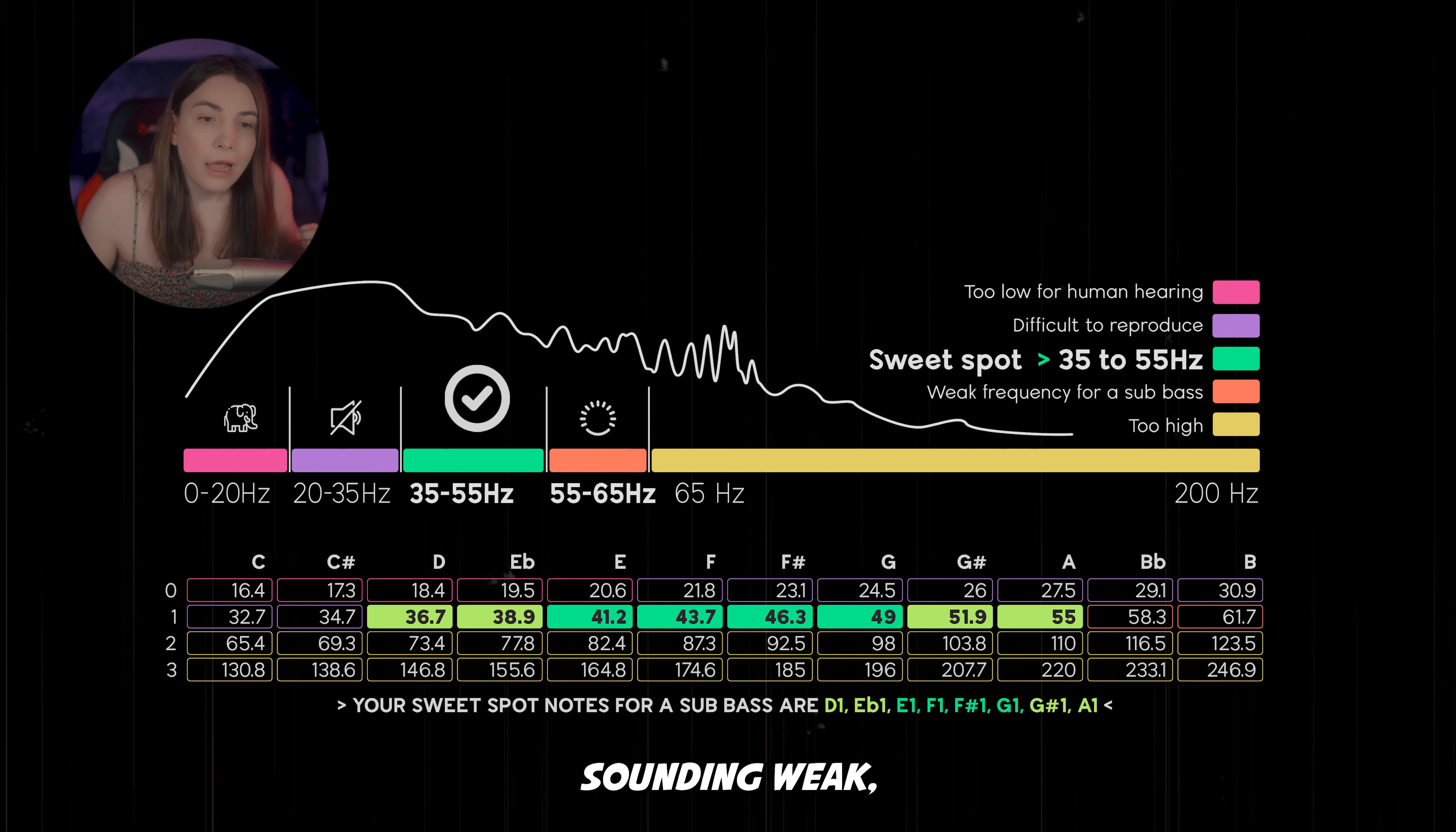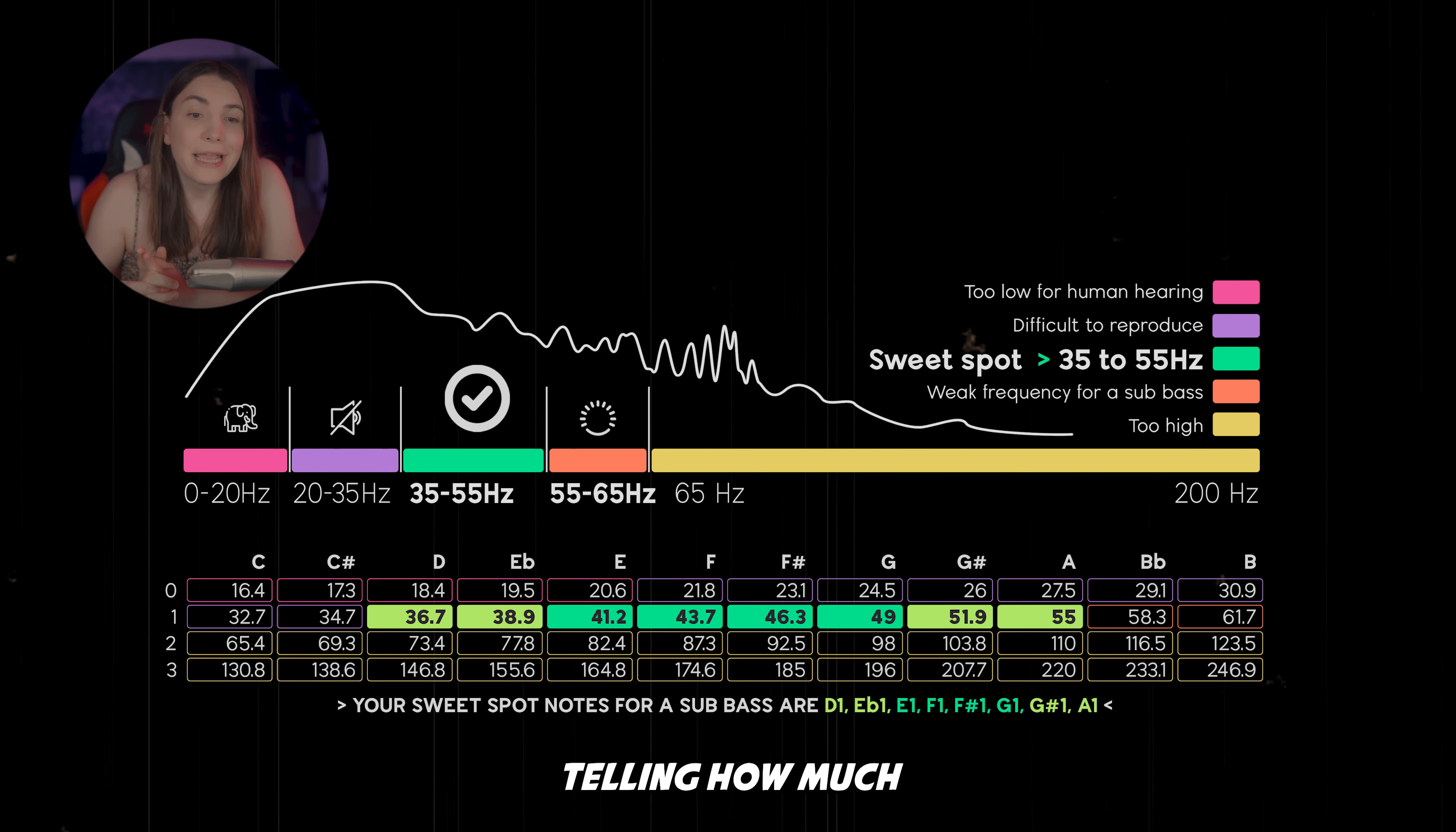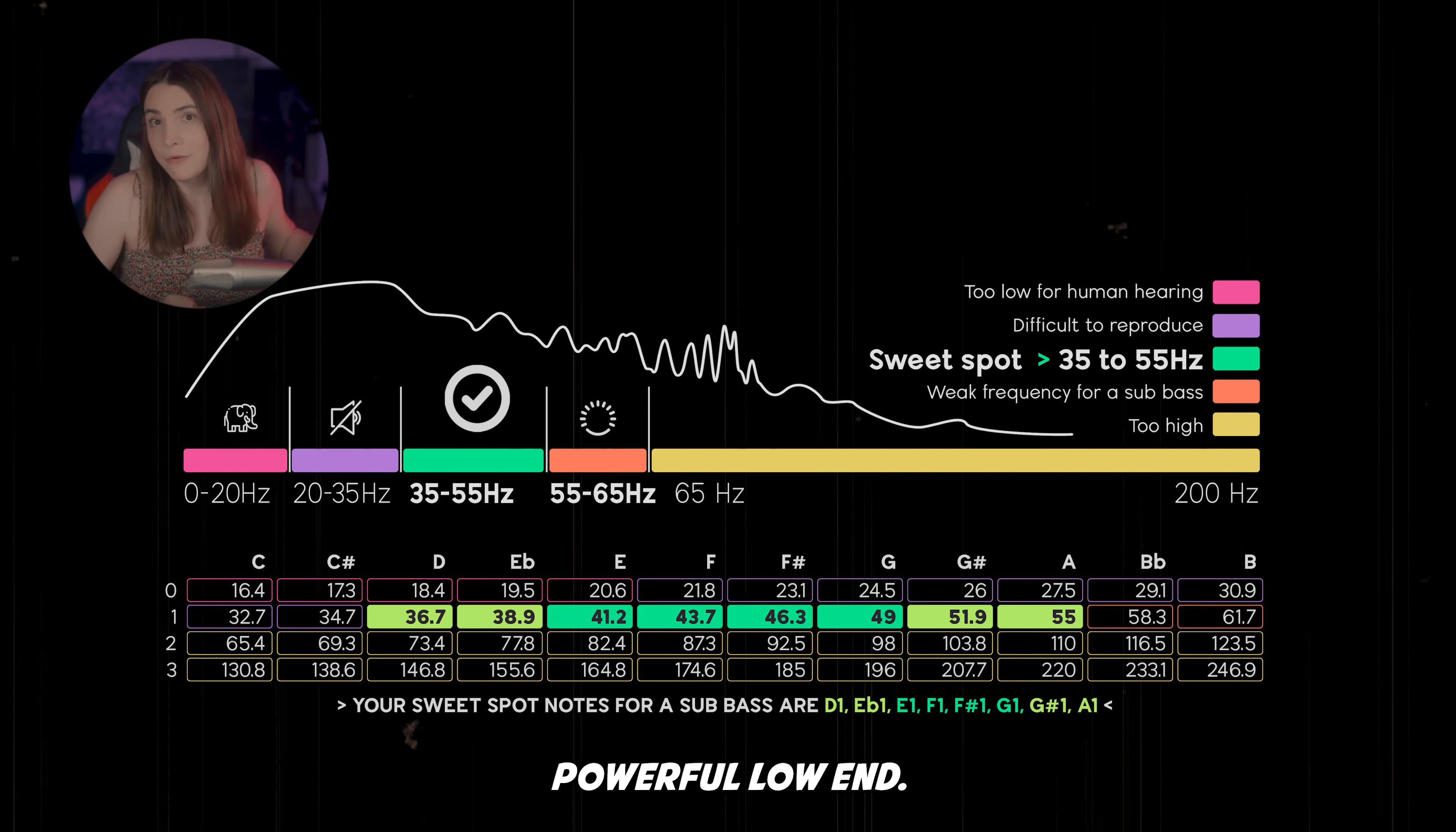This means that if you write a track in F, for example, you can go up and down quite a bit without worrying about your sub bass sounding weak or being almost impossible to hear. Hence you'll find many dance music producers telling how much they like writing songs in F for powerful low end.